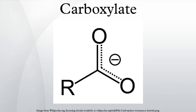A carboxylate is a salt or ester of a carboxylic acid. Carboxylate salts have the general formula M, where M is a metal and N is 1 or 2. Carboxylate esters have the general formula RCOOR, where R and R are organic groups.